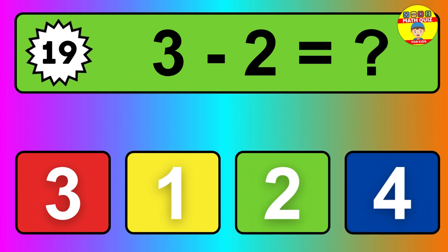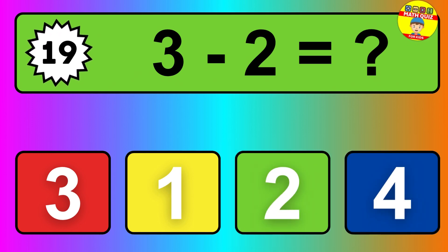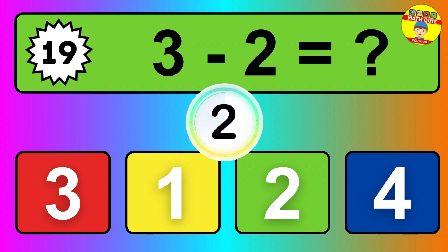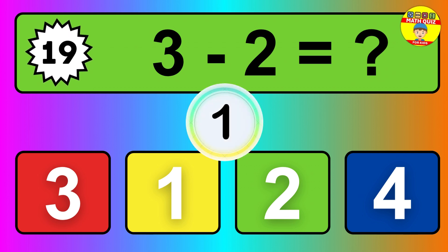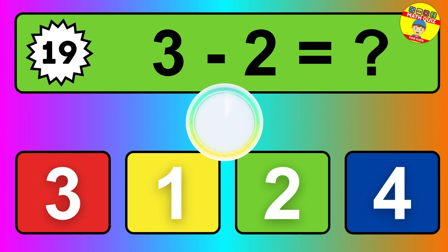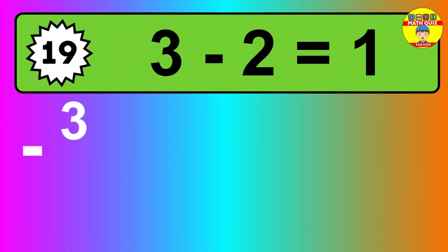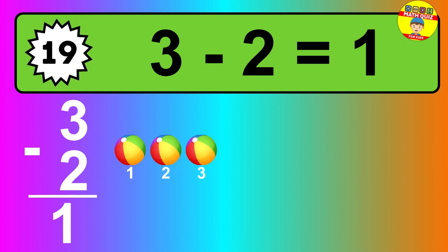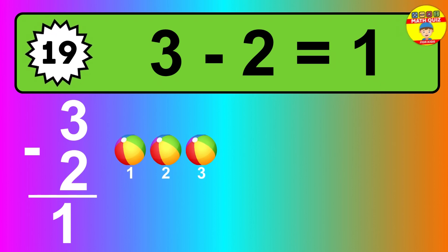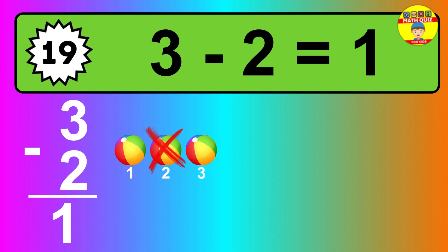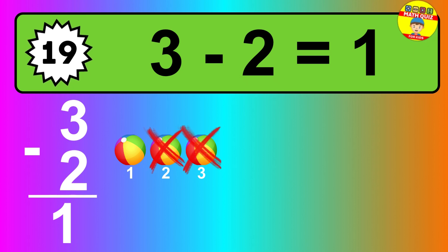Question 19. 3 minus 2 equals what? So the answer is 3 minus 2 is 1. Let's count it. 1.